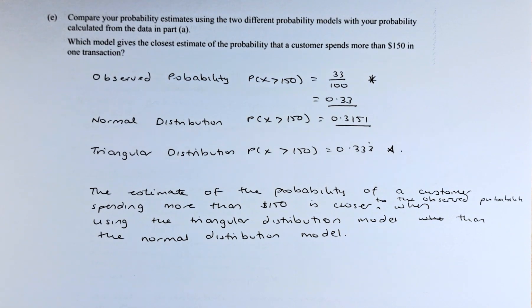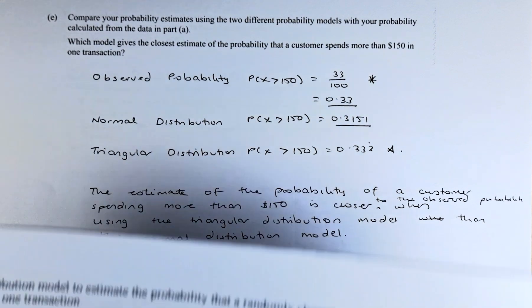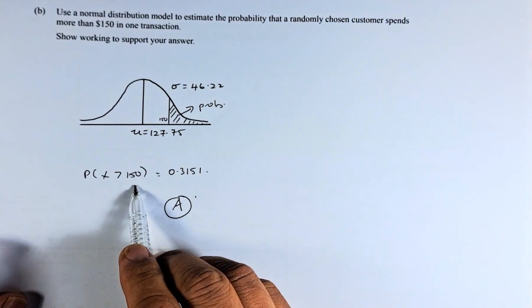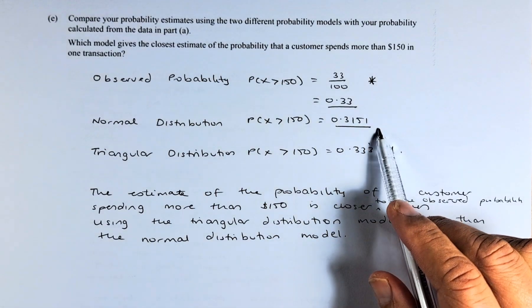Next, in question 1B, we did a normal distribution. So normal distribution, the graph looks like this. The probability more than $150 is 0.3151. So we have written that 0.3151.